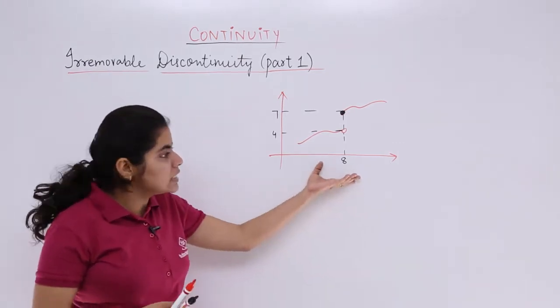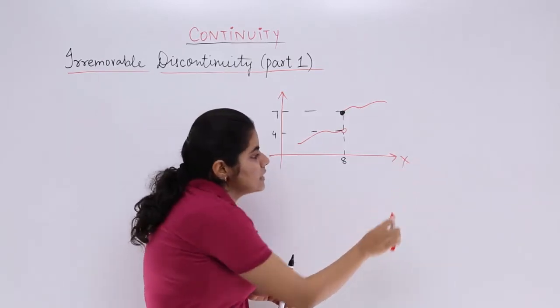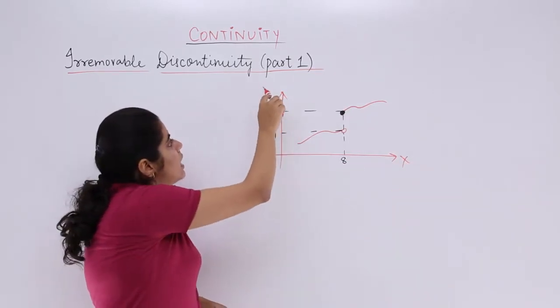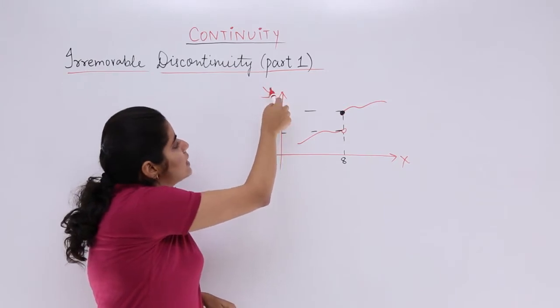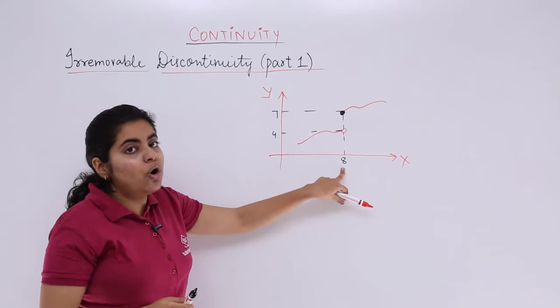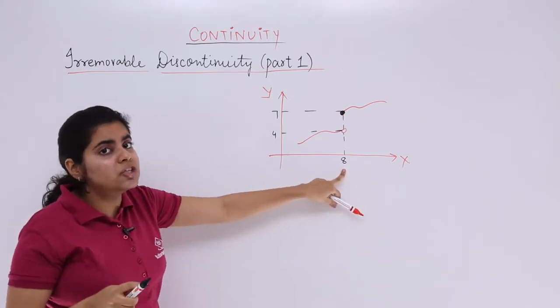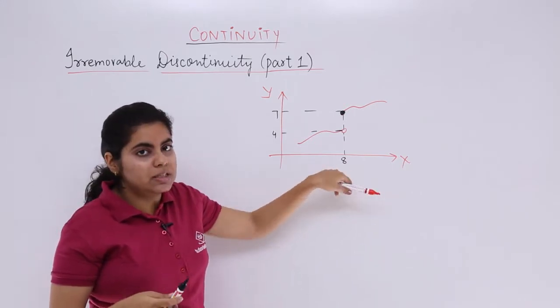You see an example, this is a graph. There is a value on the x-axis that is 8. There are two values on the y-axis namely 4 and 7. What is the value of the function? I repeat, what is the value of the function if the function is f(x) at x equals 8?